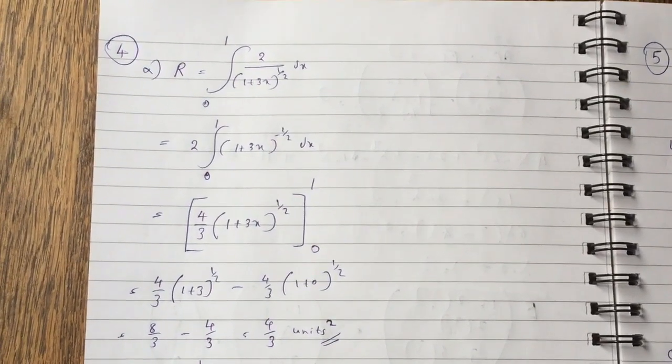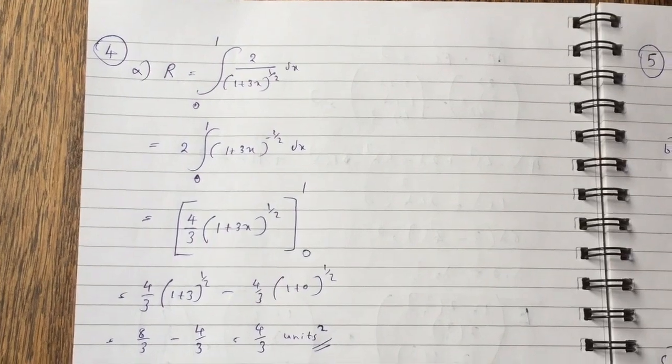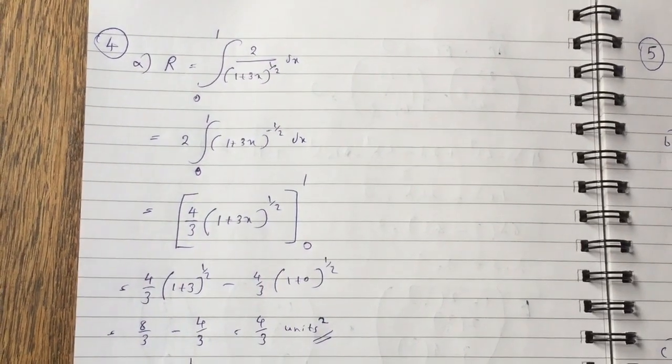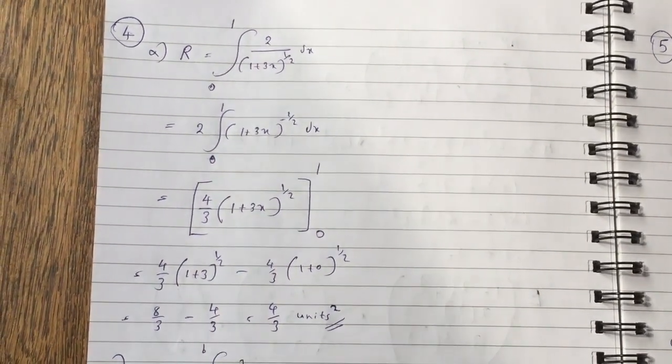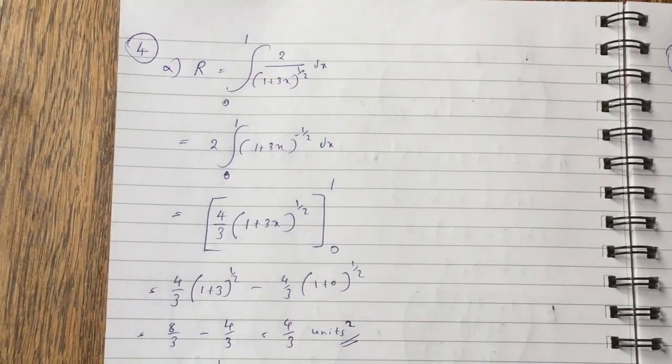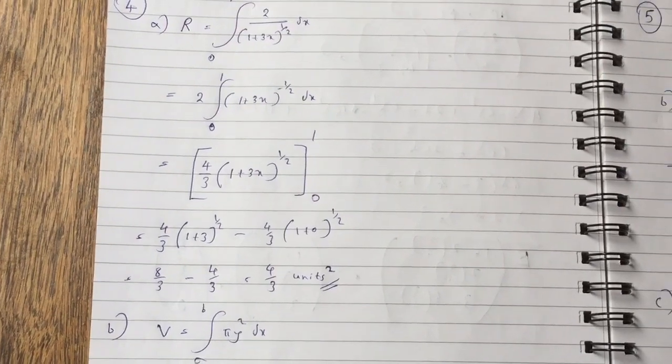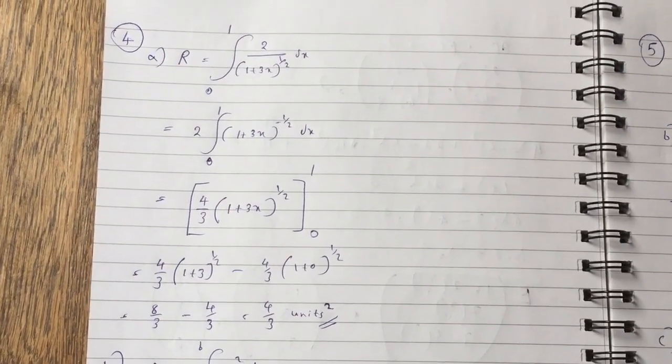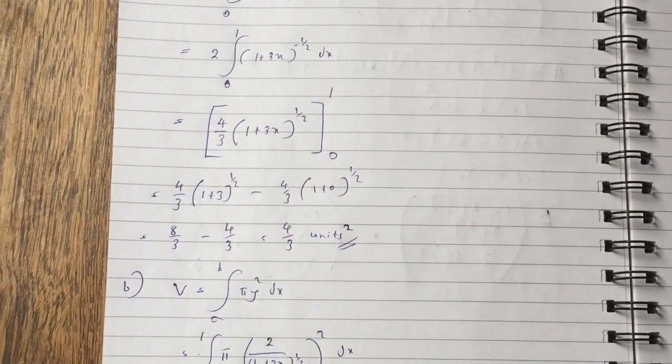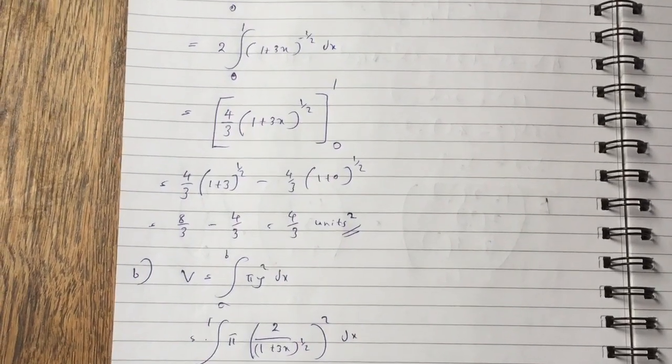Area R is the integral from 0 to 1 of 2 over 1 plus 3x to the half dx. All I did in the second step is took the 2 out and put the fraction at the top. So it's minus half power and when you integrate it you get 4 thirds 1 plus 3x to the half between 0 and 1. When you substitute the values, you get 4 over 3 unit squared as the answer.